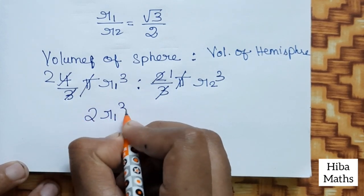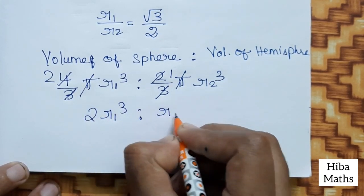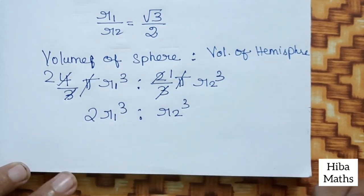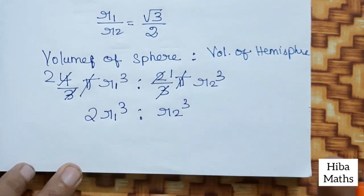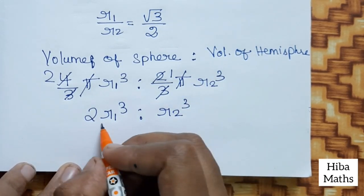So 2R₁³ is to r₂³. So we replace the value of R₁ and r₂.